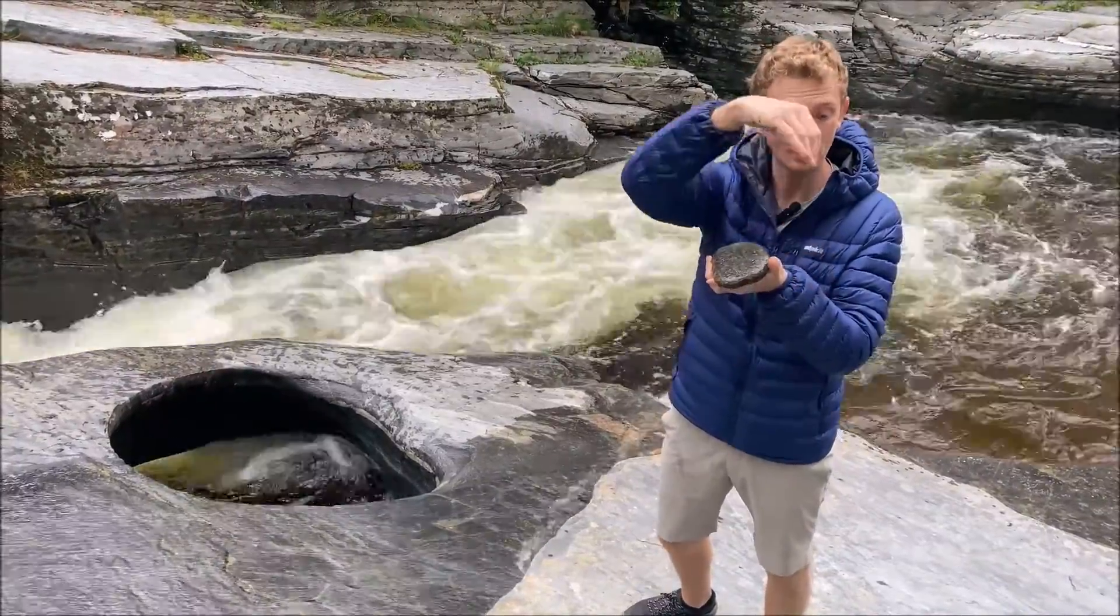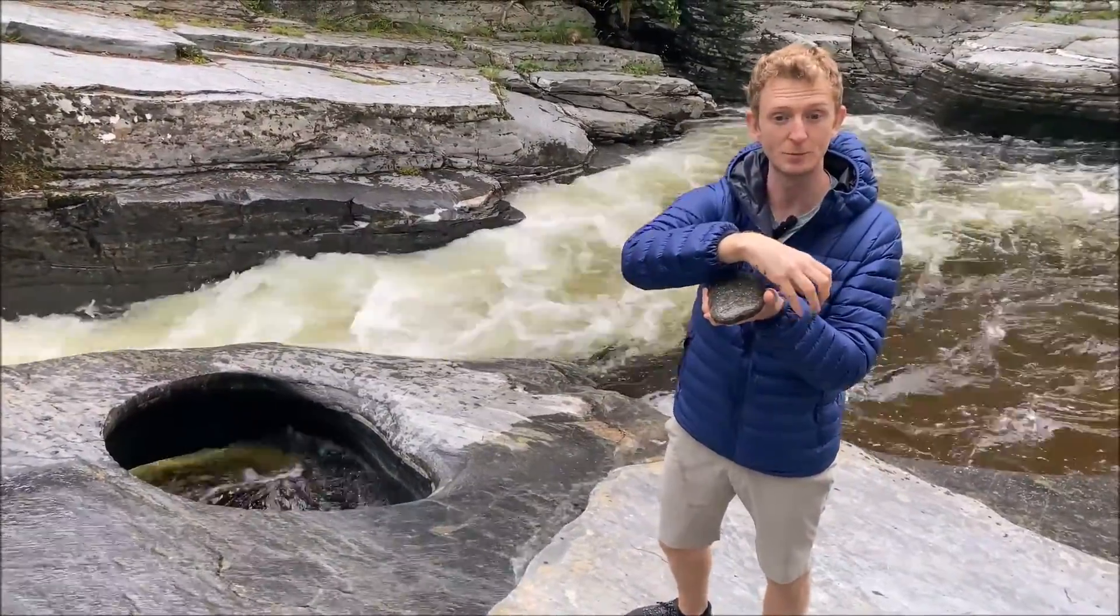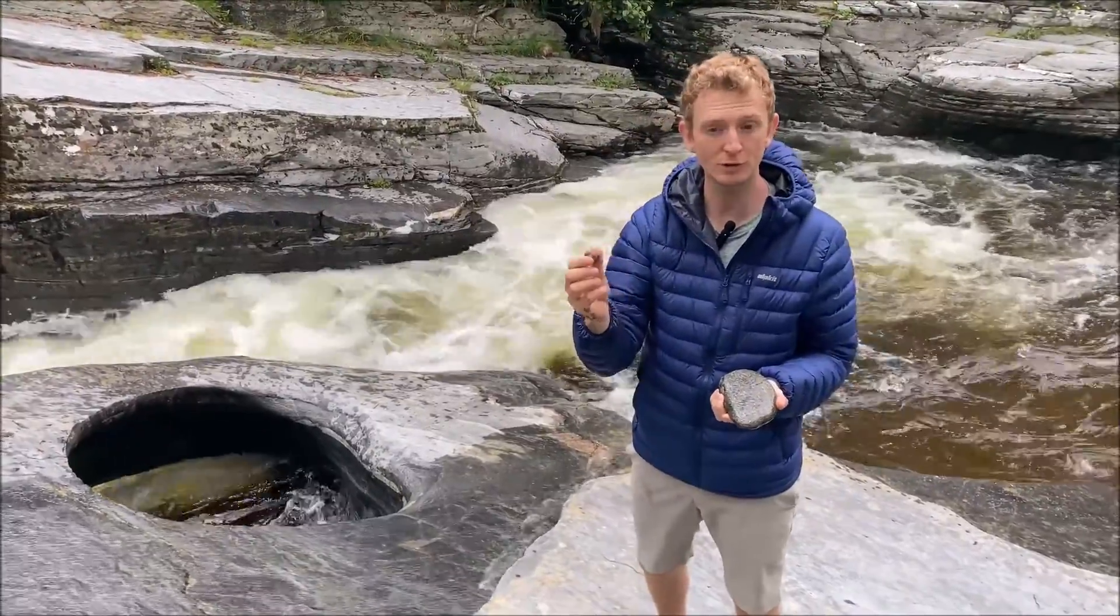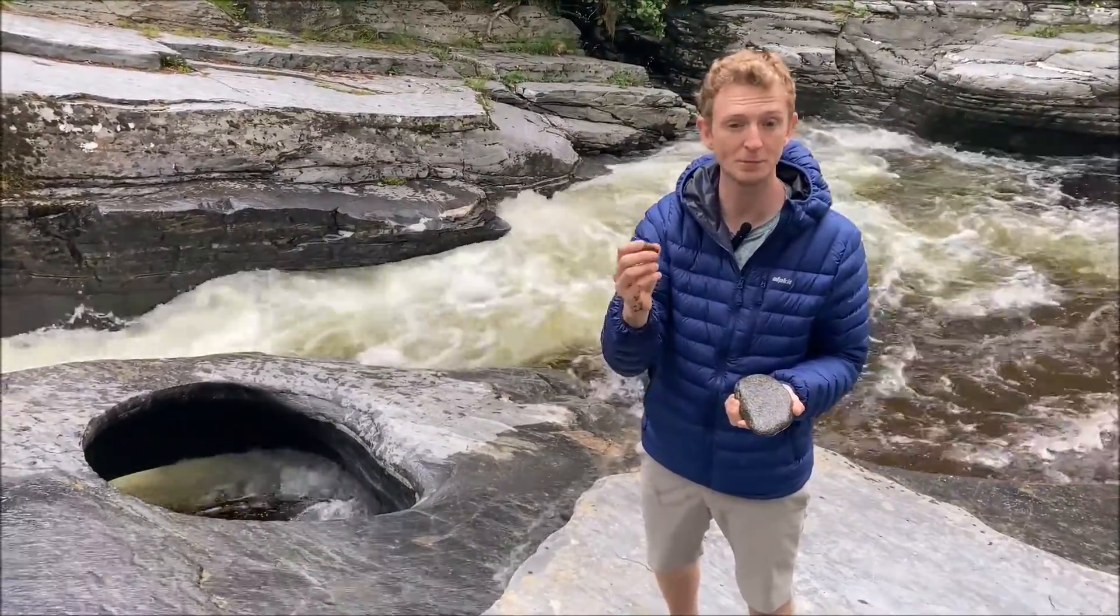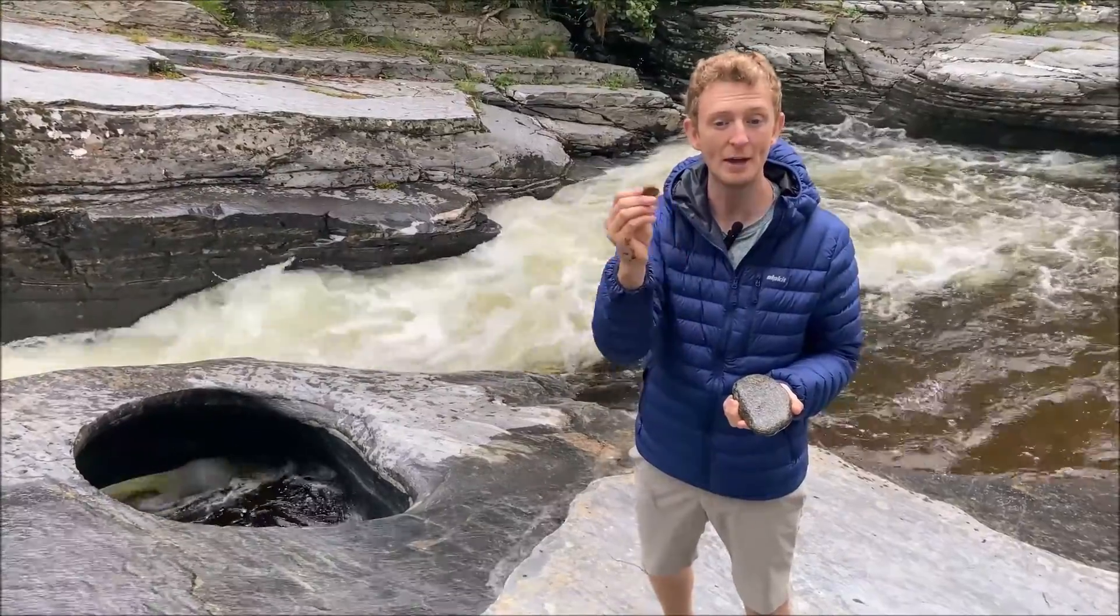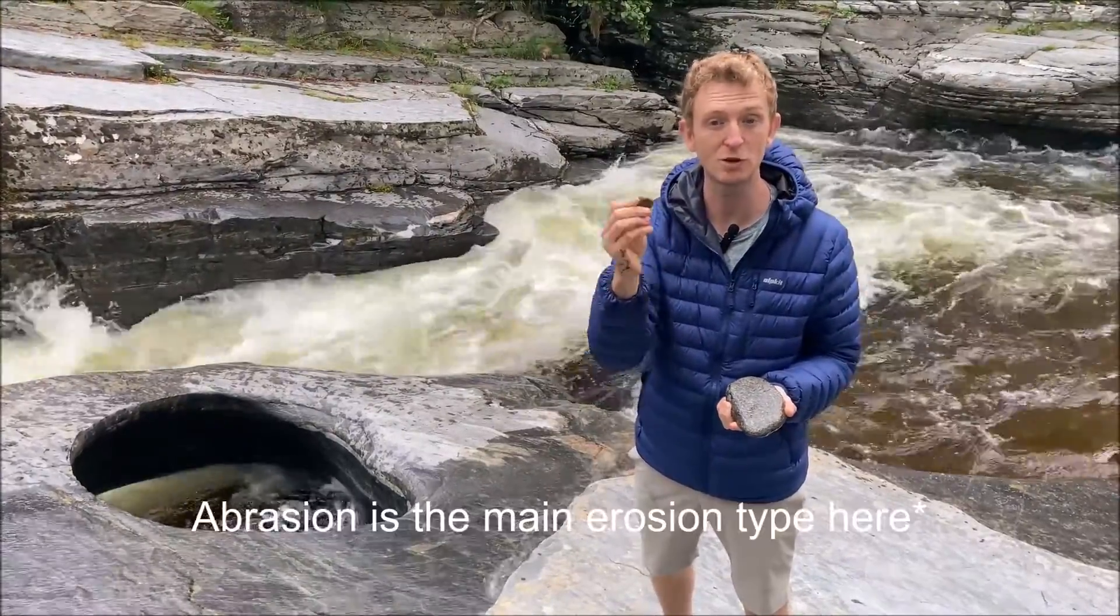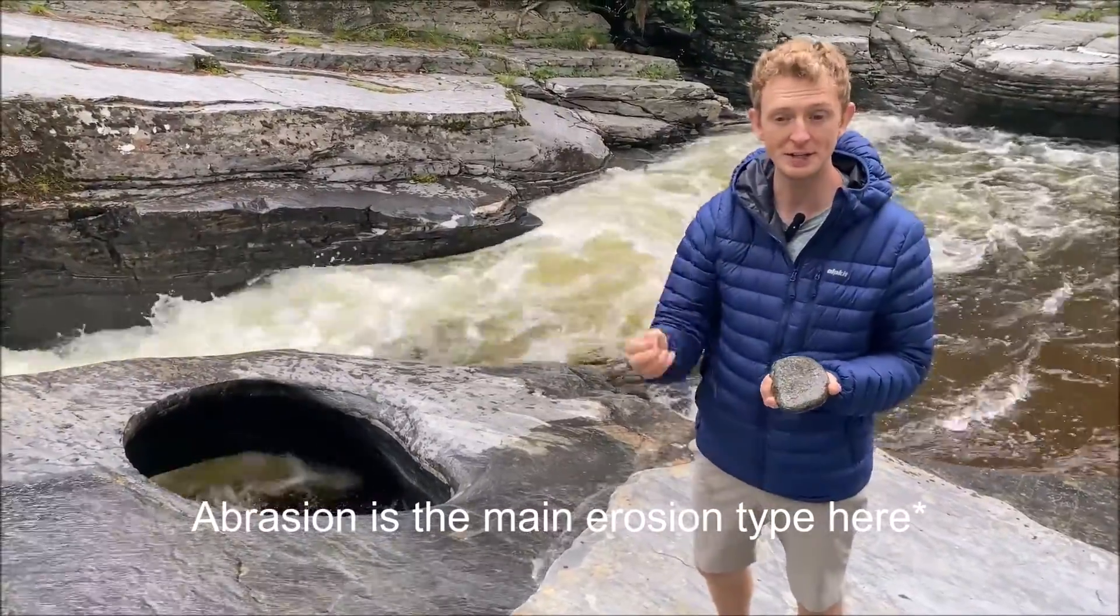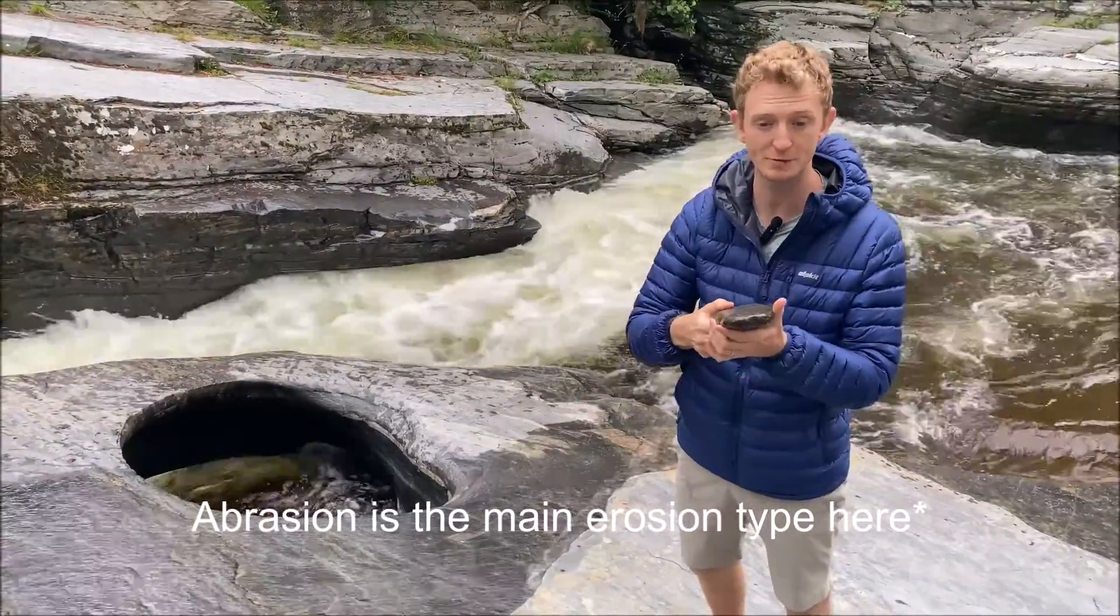That downward motion means that we get hydraulic action, or cavitation if we're at A-level, and that causes a depression to form—a small hole. Once we've got a small hole, rocks carried in the river or transported by the river will get into it and they'll move around in it, eroding the river, creating a small pothole.